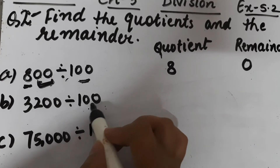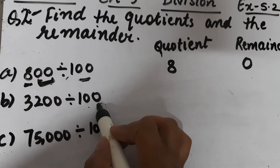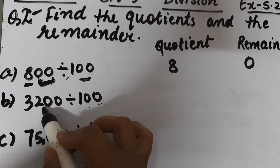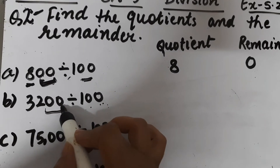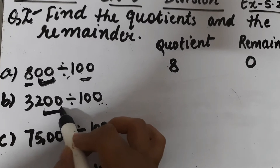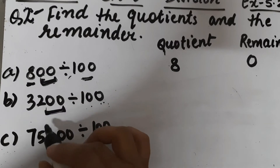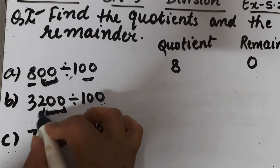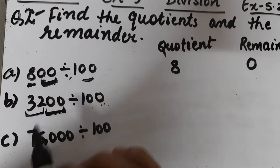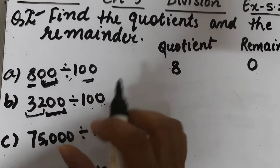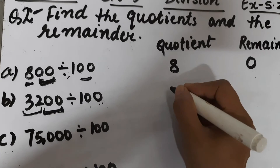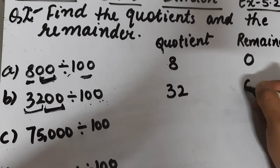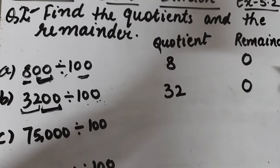Part b is 3200 divided by 100. We are dividing by 100, so the number formed by the ones and tens place is the remainder, and the remaining digits are the quotient. So the quotient will be 32 and the remainder will be 0.